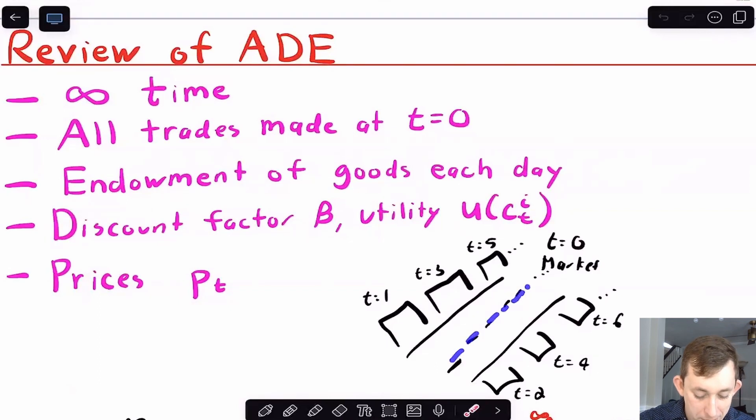Remember that we have prices pt because in the Arrow-Debreu market at t equals zero, you're walking down this street where people are selling the goods at each given time. A good sold at different times is basically the same as two different goods. You take your endowment to this market and you trade for goods at different times. This goes into the infinite future, no uncertainty here.